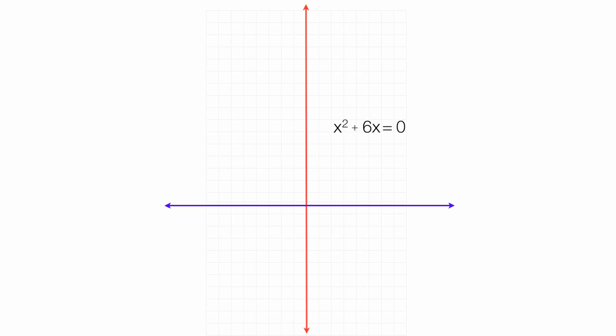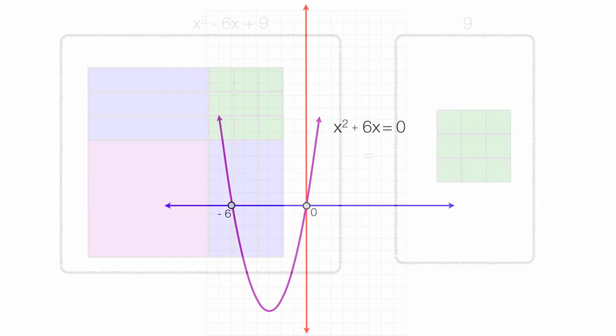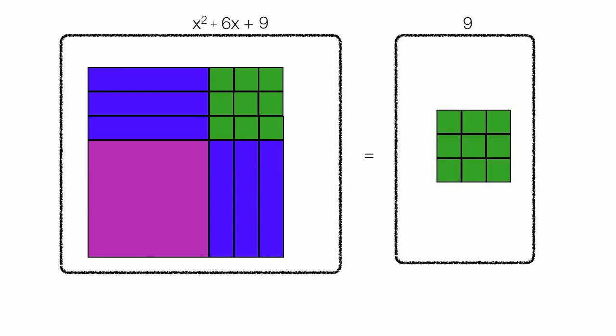When I graph this equation, my solution is where it crosses the x-axis, or y is equal to 0. It crosses it at negative 6, and it crosses it at 0. So it turns out I needed to add 9 to both sides of the equation to complete the square.